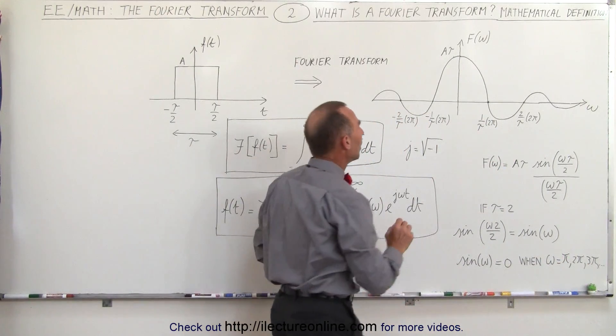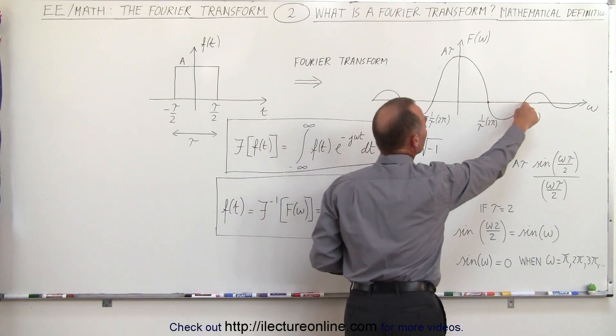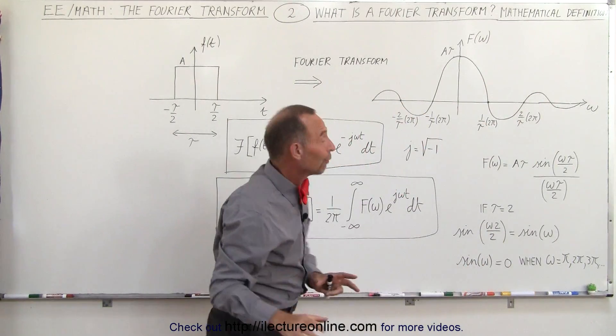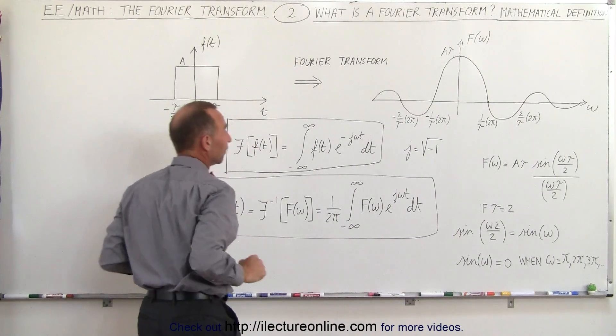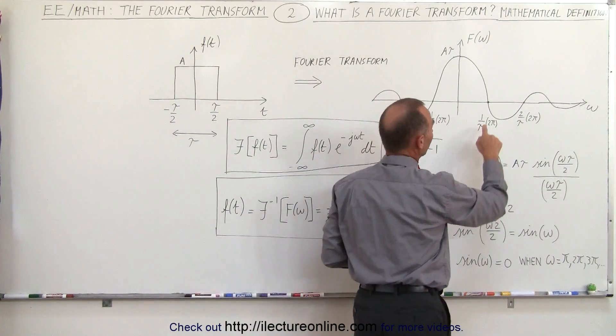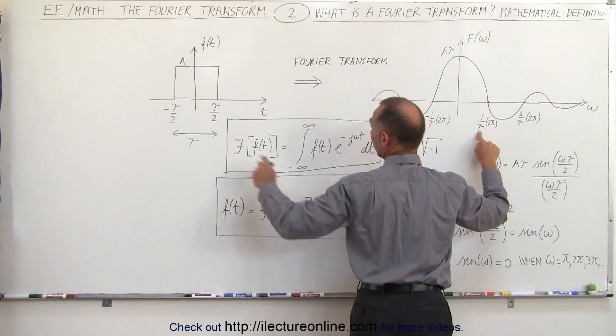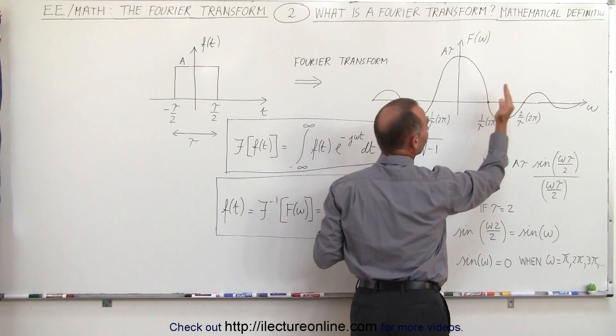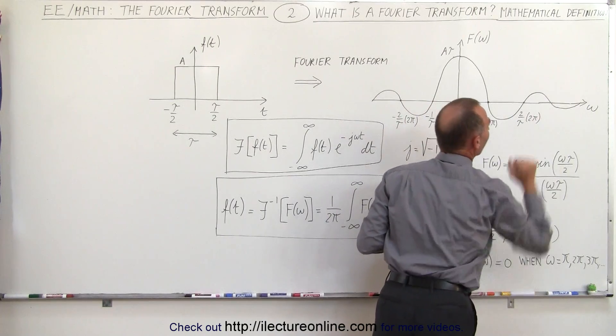So now you can see the relationship between these points right here where the function crosses the horizontal axis. Again this is only true of course for this particular function. But you can see here that when you plug in 1 over 2 for tau, because that's the pulse width right here, the two's cancel out, you get pi, 2 pi, 3 pi, 4 pi and so forth.